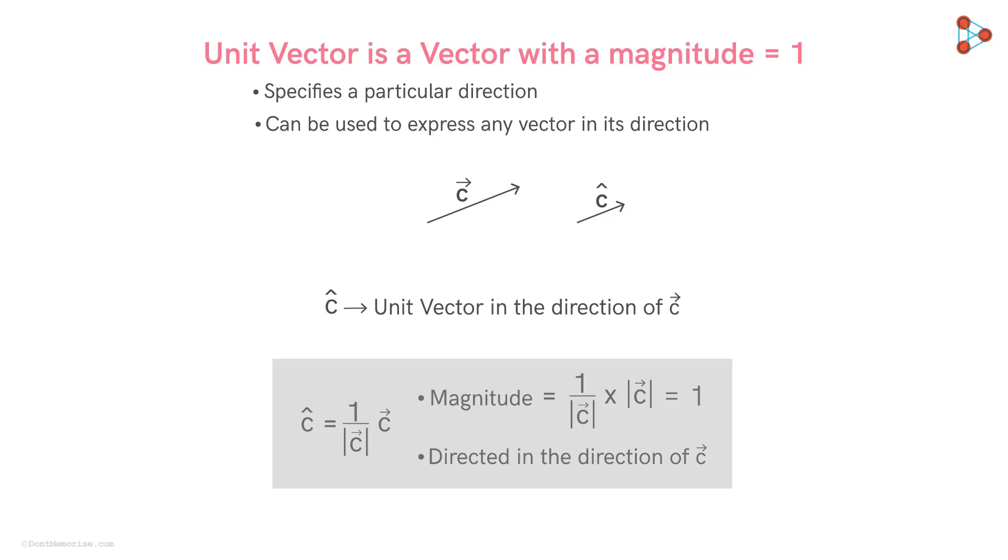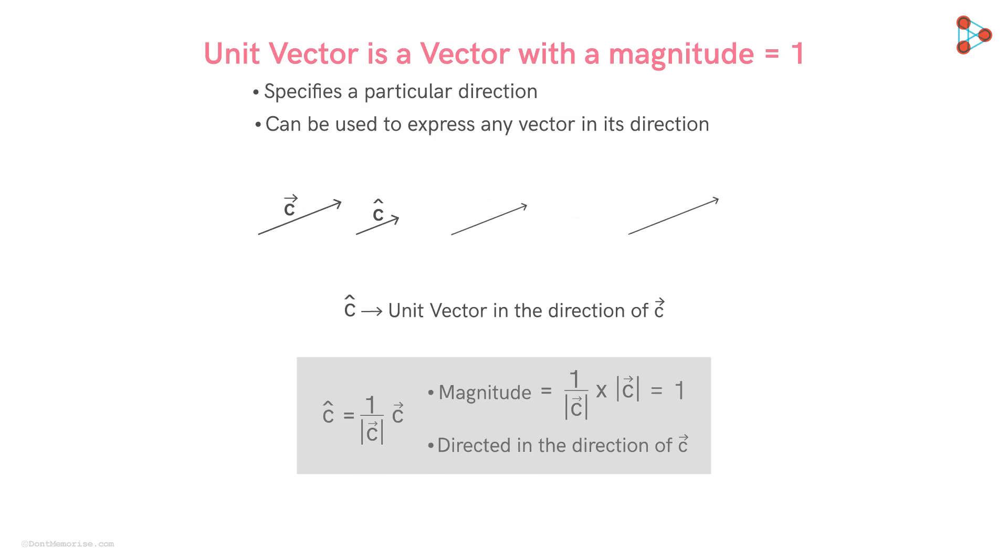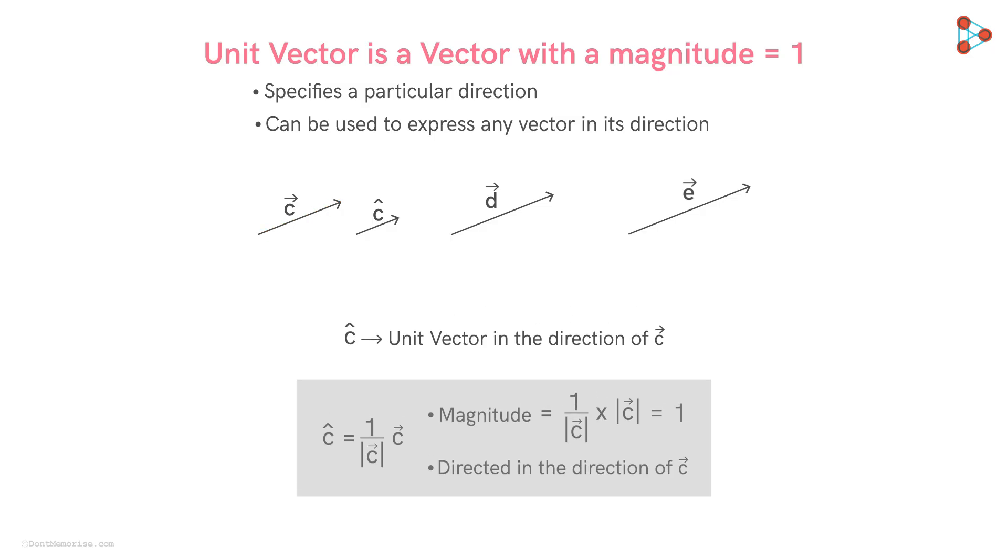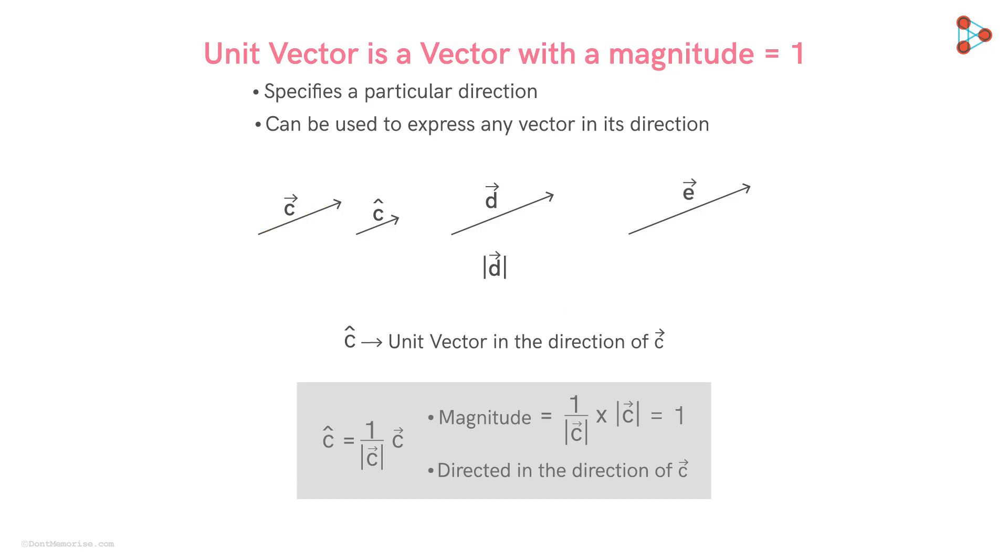Let's take a few examples and understand this. Suppose we have these two vectors d and e directed in the same direction as that of vector c. Now consider the vector magnitude of vector d times the vector c hat. As the magnitude of vector c hat is 1, the magnitude of this vector will be equal to that of vector d. And since the vector c hat and d are directed in the same direction, the vector d will be equal to this vector.